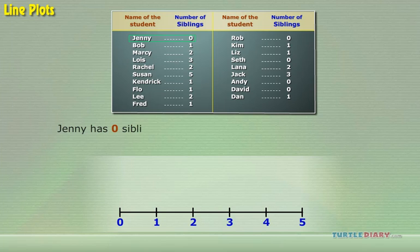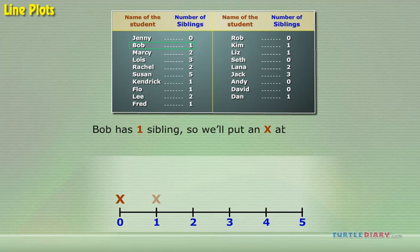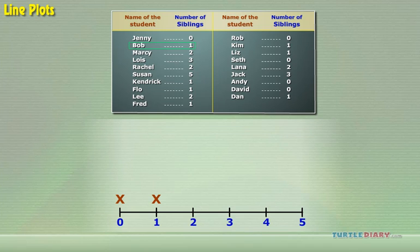Jenny has 0 siblings, so we'll put a cross above 0 on our line. Bob has 1 sibling, so we'll put a cross above the 1. We can fill in the rest of the line plot this same way.